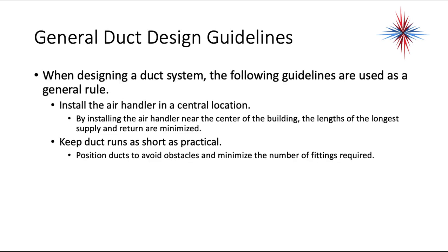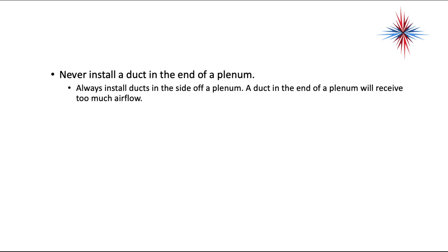When designing a duct system, the following guidelines are used as a general rule. Install the air handler in a central location — by placing it near the center of the building, the lengths of the longest supply and return runs are minimized. Keep duct runs as short as practical. Position ducts to avoid obstacles and minimize the number of fittings required. Never install a duct at the end of a plenum; always install ducts in the side of the plenum, as a duct at the end will receive too much airflow and will be noisy.